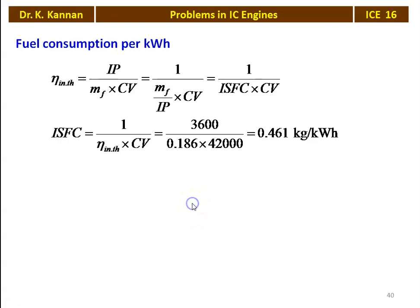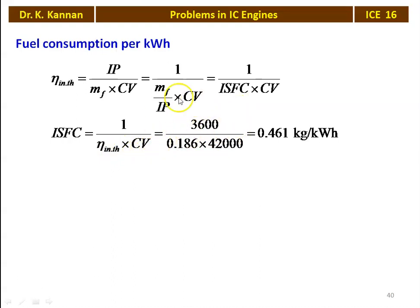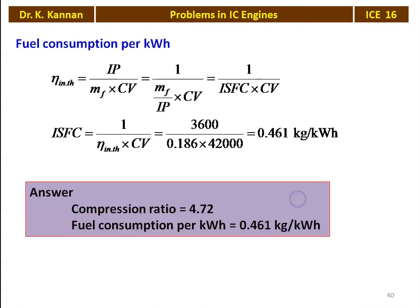The fuel consumption per kilowatt hour: from the definition of indicator thermal efficiency, ISFC = 3600 / (indicator thermal efficiency × calorific value) = 3600 / (0.186 × 42000) = 0.461 kg/kWh. The answers: compression ratio = 4.72, fuel consumption per kilowatt hour = 0.461 kg/kWh.